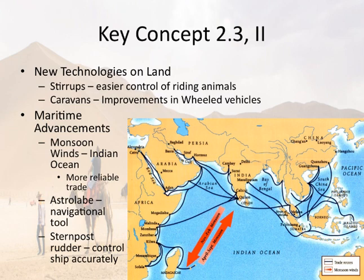Indian Ocean Trade traded a much more diverse set of goods and a lot more everyday items because you can trade in bulk — a lot more stuff can be moved via boat. With three regions — Africa, South Asia, Southeast Asia, and East Asia — all trading in abundance, you get a very diverse set of goods, not just silk for horses. That also makes for more efficient trade and a more bustling marketplace.